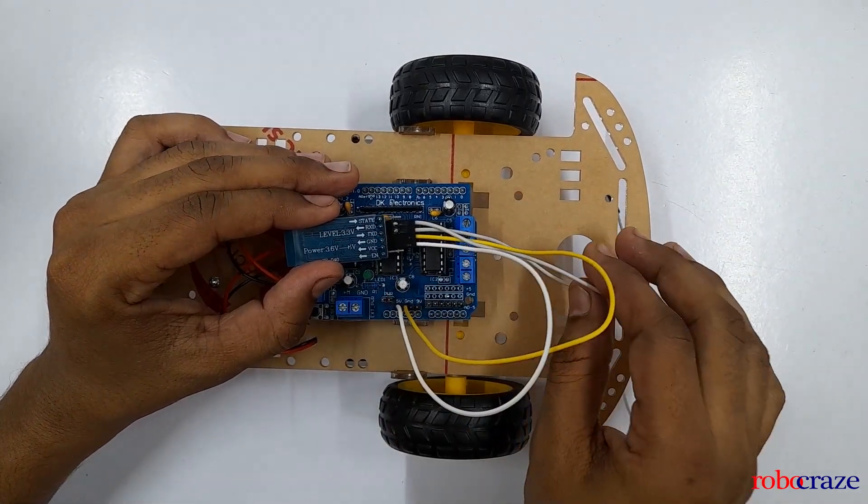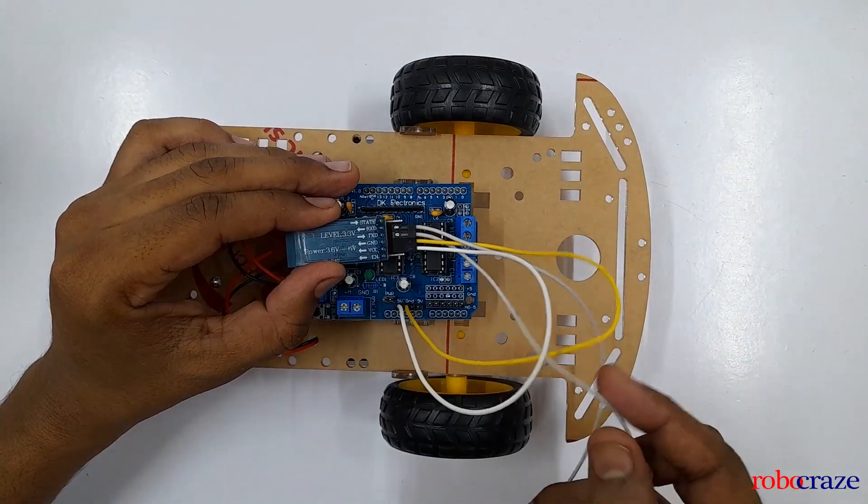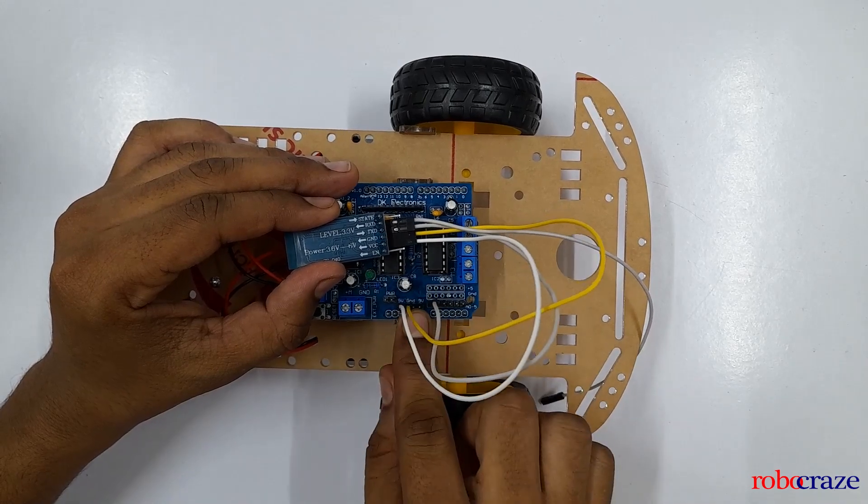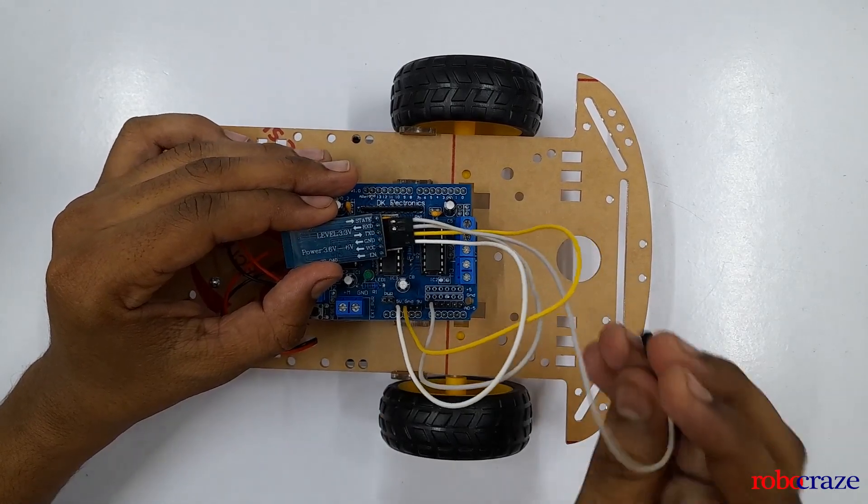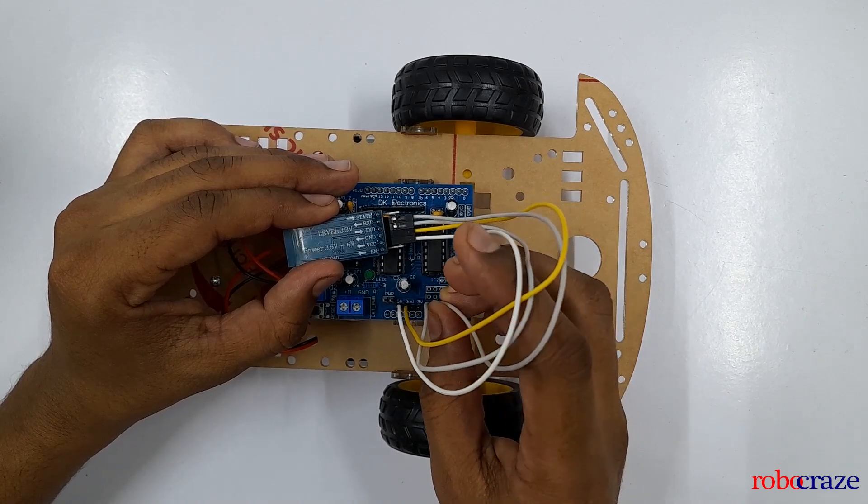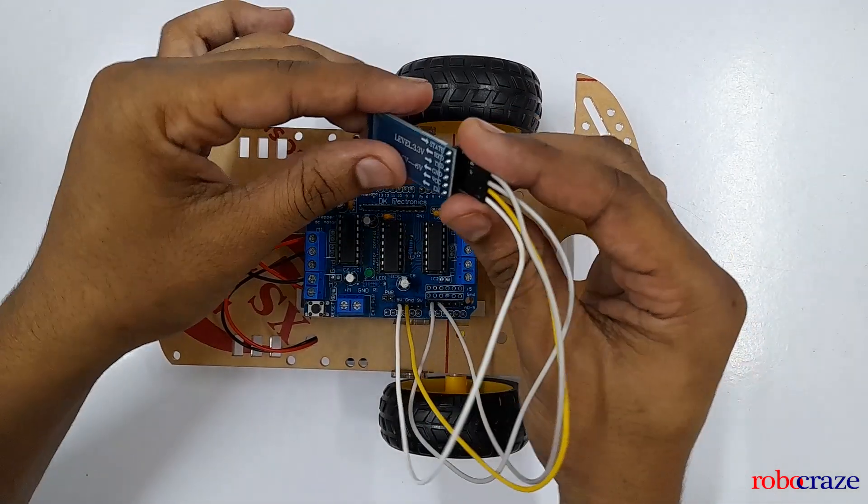Next we will be connecting the TX pin of the Bluetooth to the A0 of the Arduino using this pin, the first pin here. And the RX will go to the A1, the second pin. This is about the Bluetooth connection.